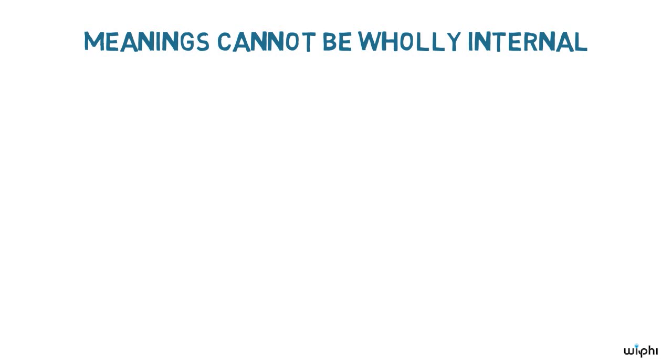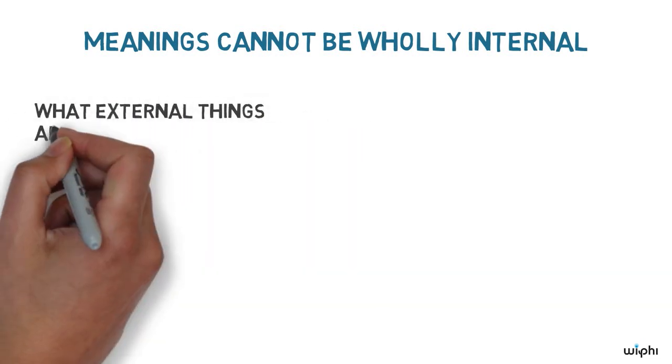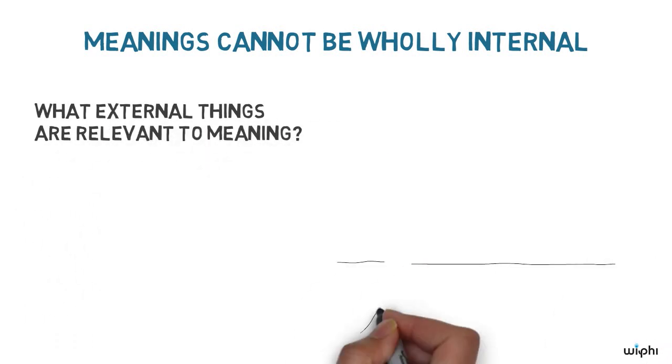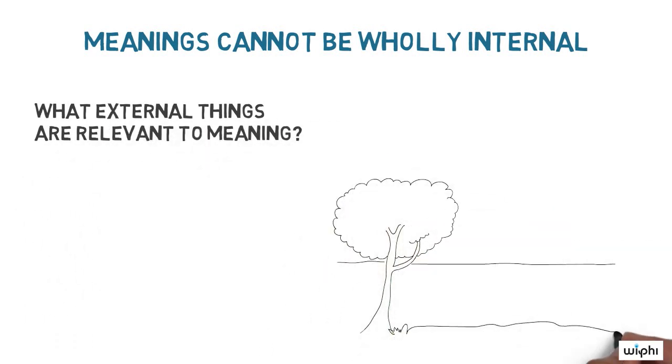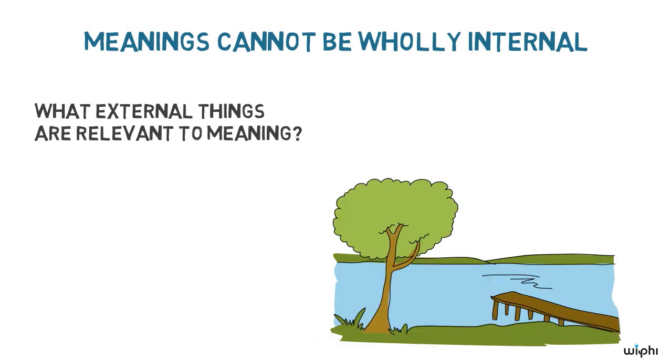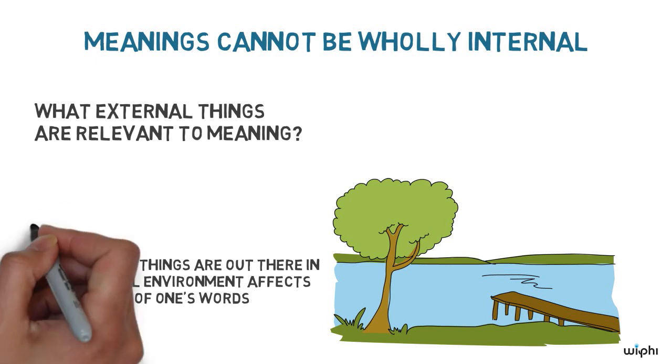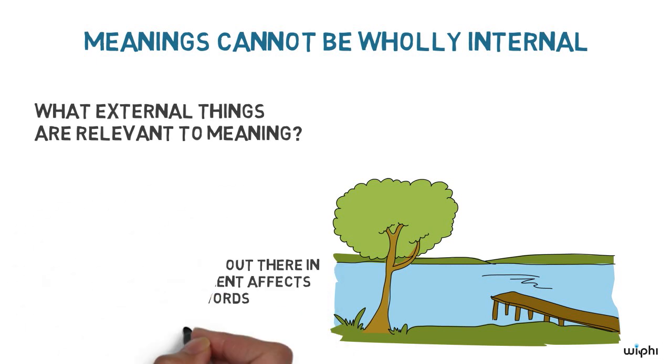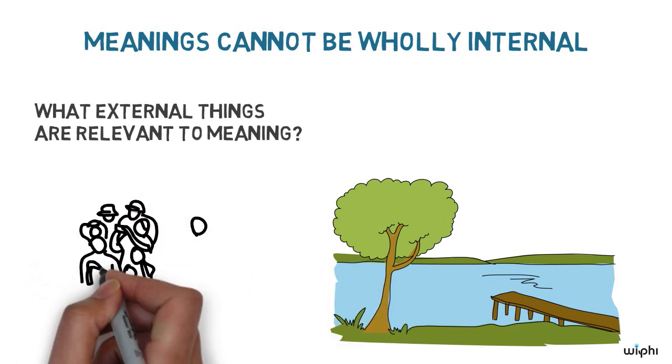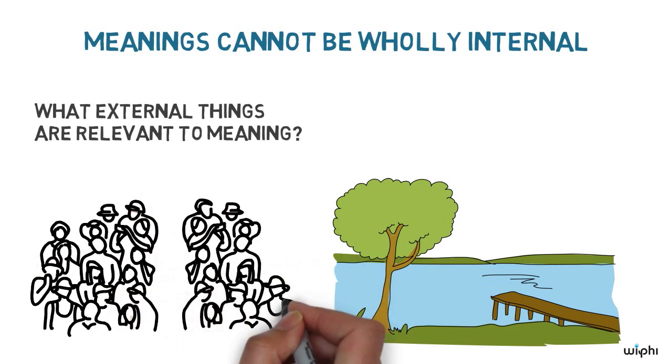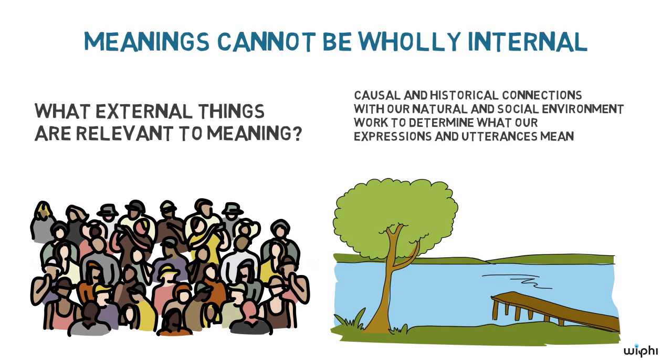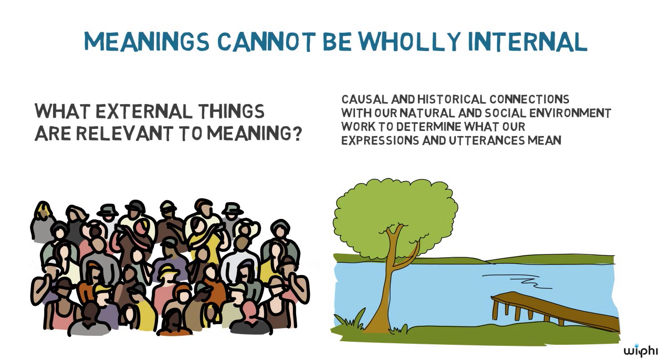If you're convinced by these examples, we can ask what external things are relevant to meaning. Both examples give evidence that one's natural, physical environment affects meaning. What kinds of things are out there in one's physical environment affects the meanings of one's words and utterances. Others have argued that the external, social environment also affects meaning. According to the externalist, causal and historical connections with our natural and social environment work to determine what our expressions and utterances mean.